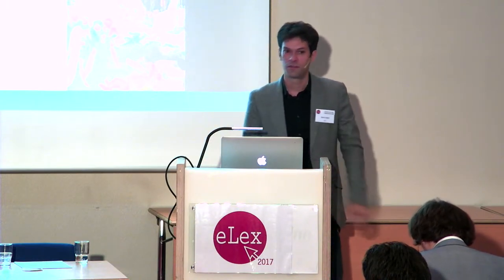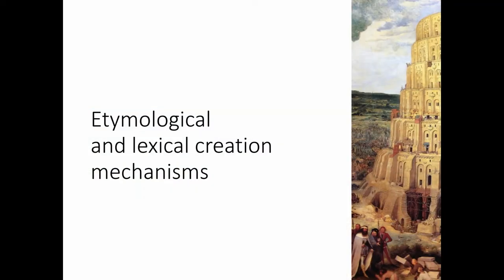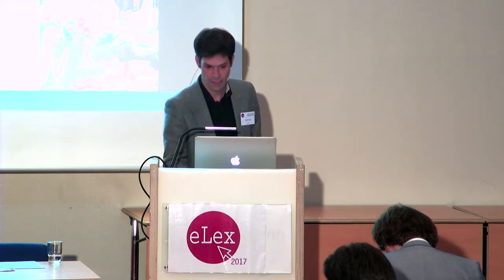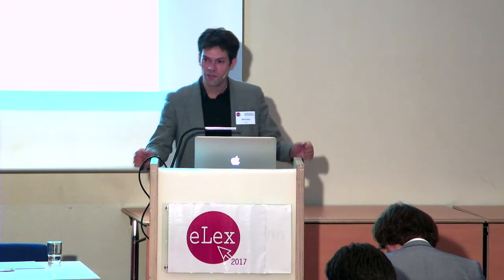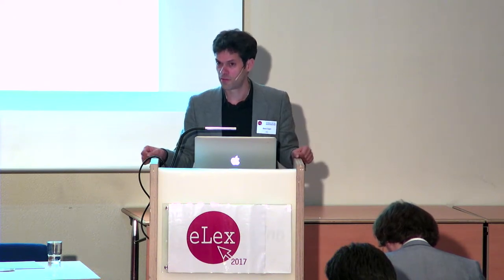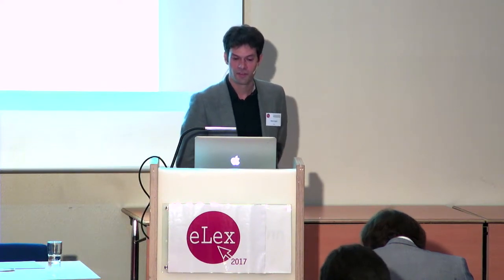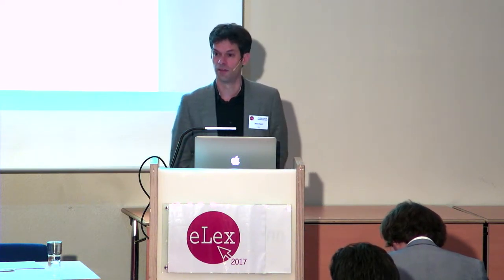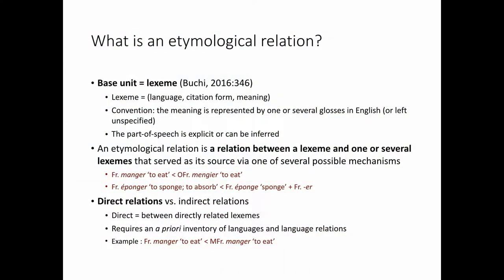Before talking about existing resources and the dictionary we used, I would like to say a few words about existing etymological and lexical creation mechanisms — something you probably already know, but just to have everything in mind and agree on the terminology. What is an etymological relation? It's a relation between two lexemes, which seems very obvious, but as we will see, it is not that obvious. I will define a lexeme as a triple made from a language name or identifier, citation form, and a meaning. By convention, we will denote the meaning by a list of English glosses.